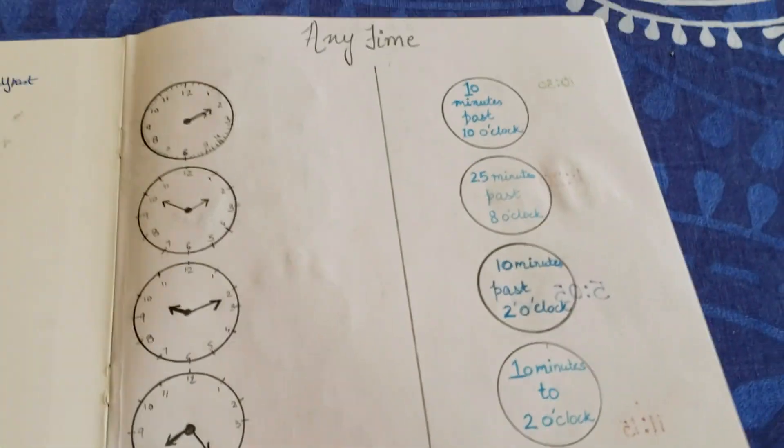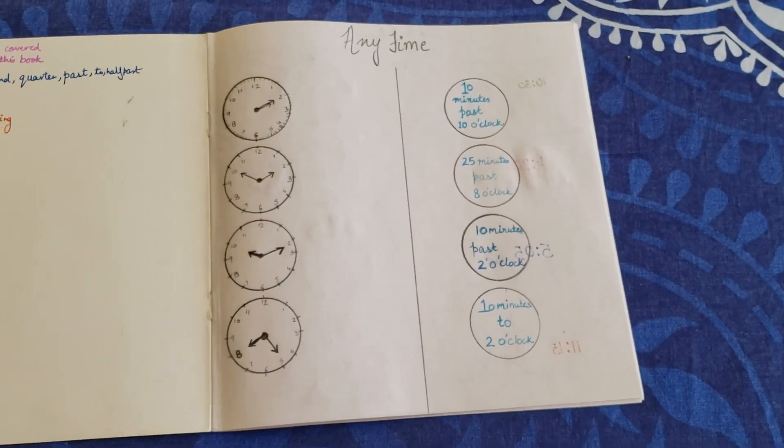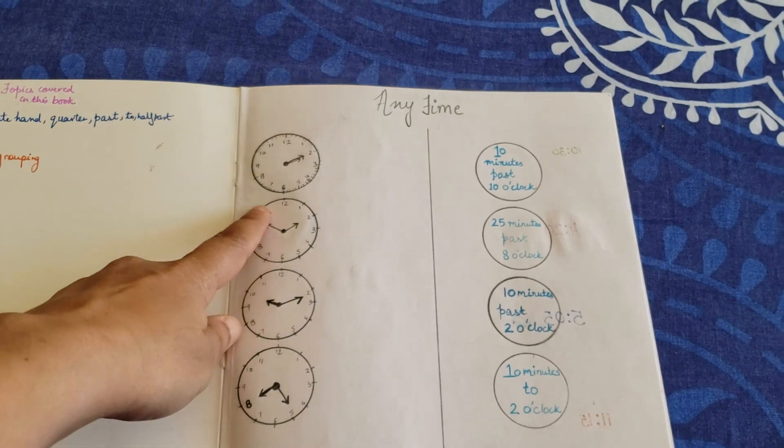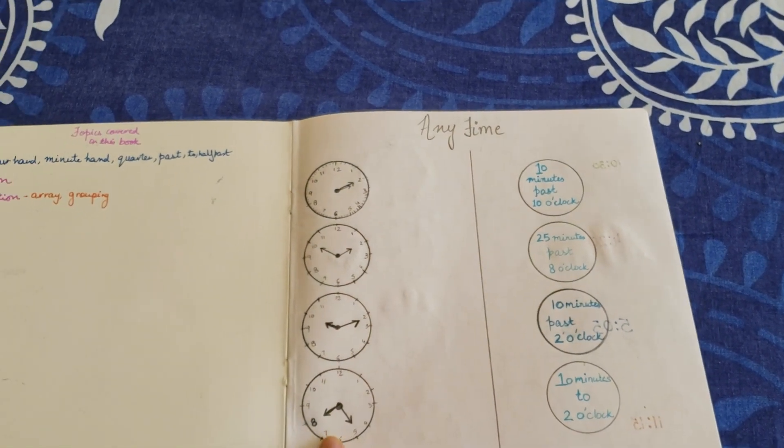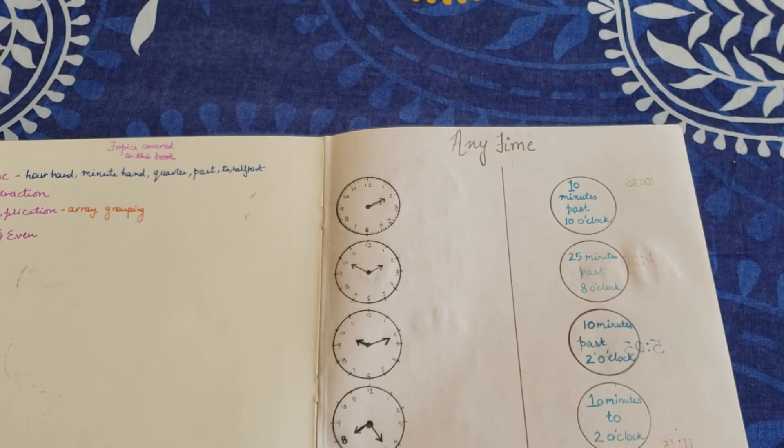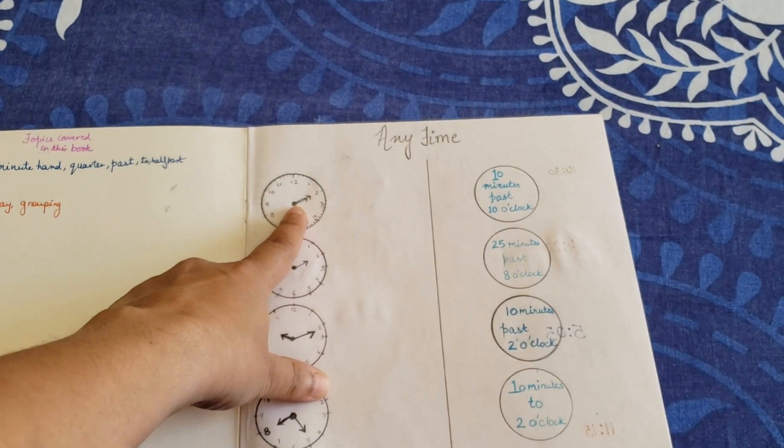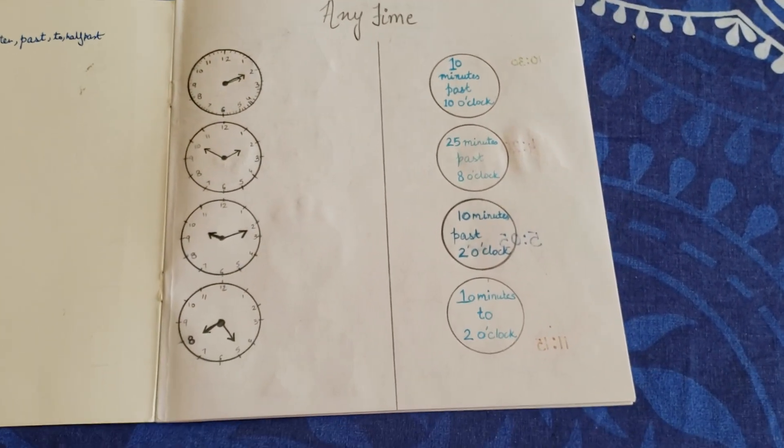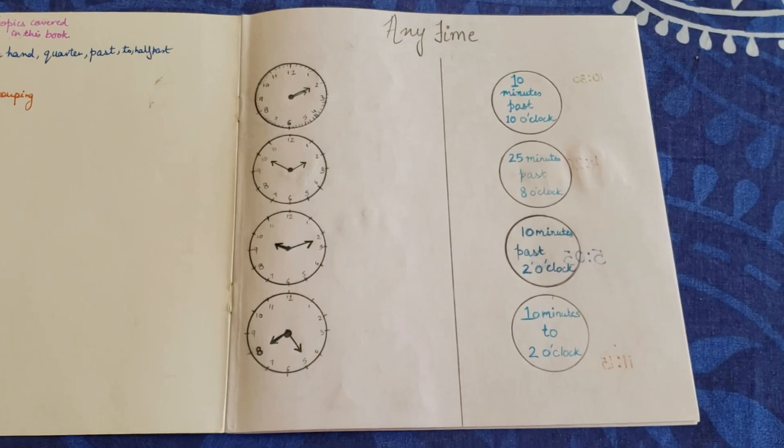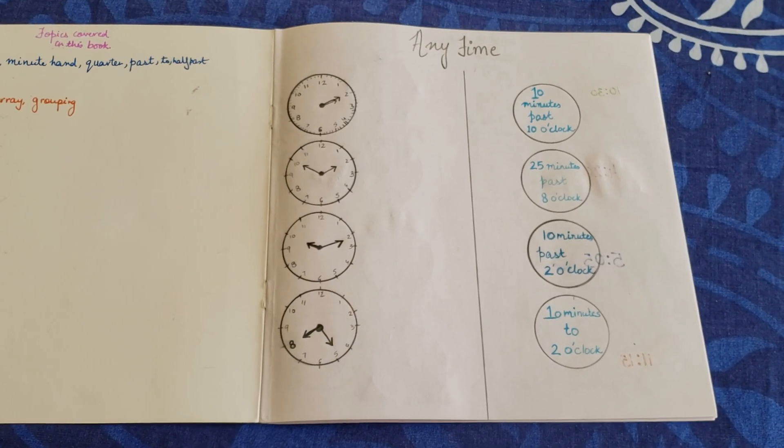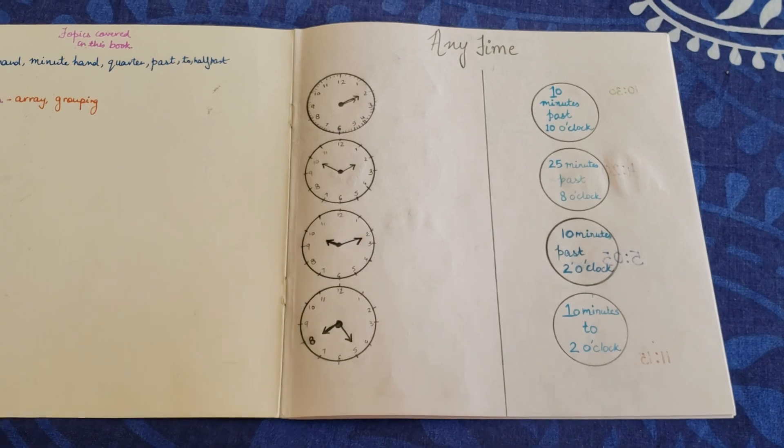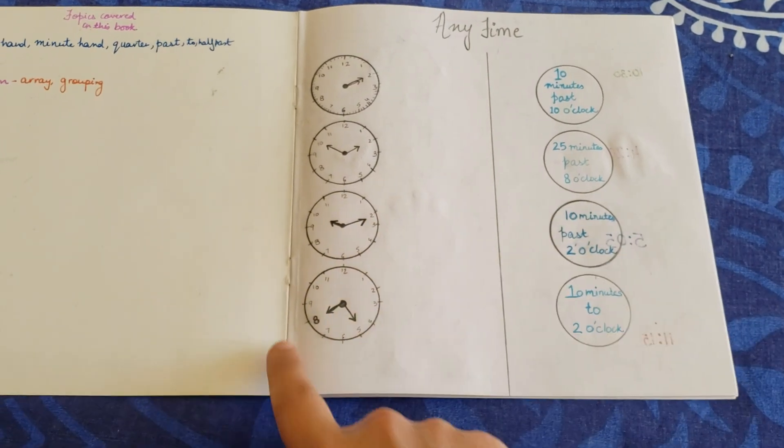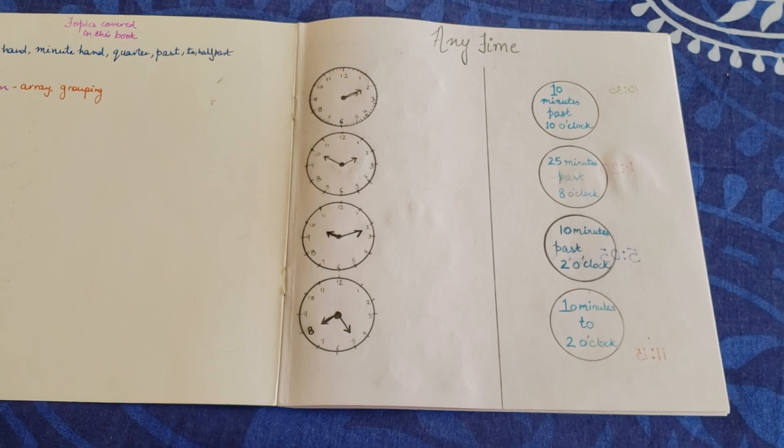So the first activity is called anytime. I've made these four clock times here and there's a time shown here and the same thing has been written here somewhere. What he has to do is find the right one and match it. Whether it's 25 minutes past eight o'clock, he needs to find where that one is and match it together.